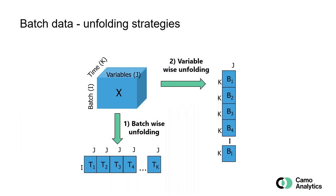So how do we analyze this data? We can in principle analyze the data directly with three-way methods. However, we typically unfold in two various ways. One is to unfold so that we have for each row a batch, and then combinations of the variables and samples or points of time as columns. However, if the length of the batches is not the same, then we cannot necessarily compare column 63 across the batches, because it will not be in the same state of the process.